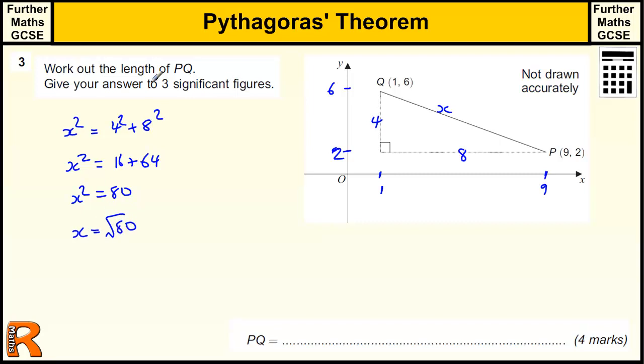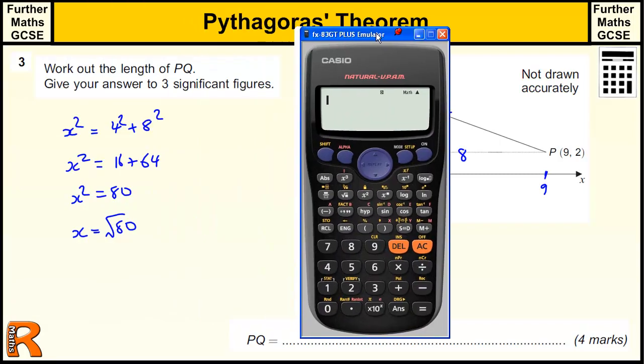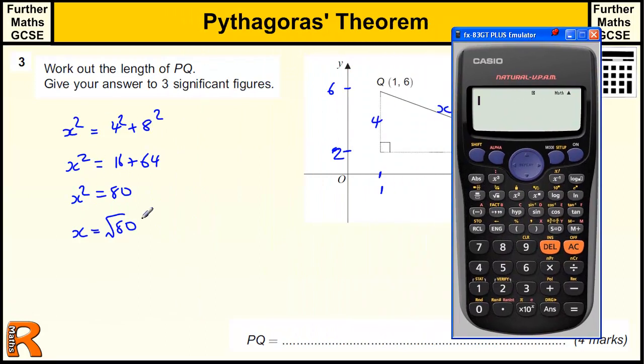And finally, we're asked to do it to three significant figures, so we do have to put it into the calculator. Normally we would just leave it as square root of 80 or actually simplify it down using our surd rules, which is 4 root 5. But because it's asked for three significant figures, we need to convert that into a decimal. So 8.94427191.